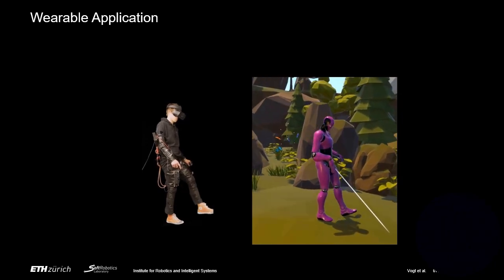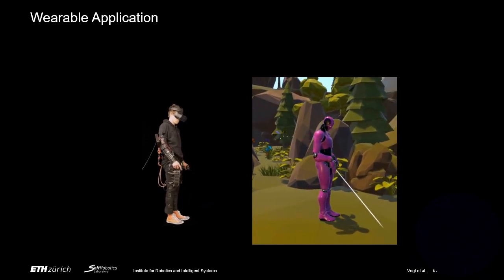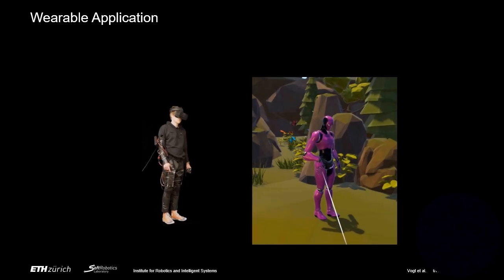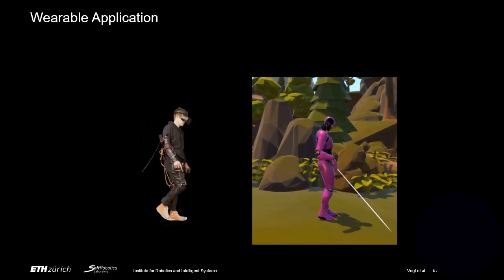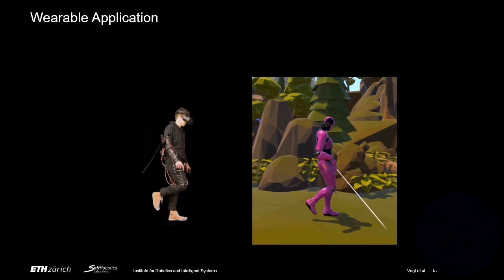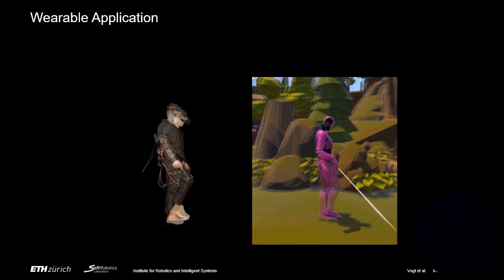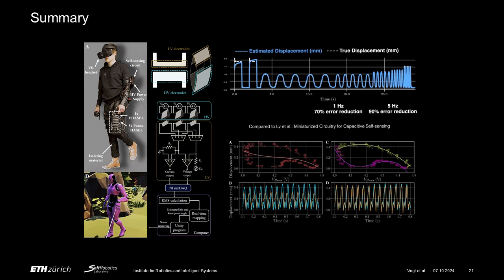As shown here, after a quick calibration, this setup using our design allows for actuation and real-time displacement sensing of four actuators using hardware that all fits into a small box mounted on the hip.